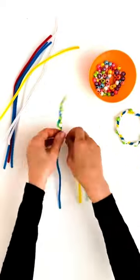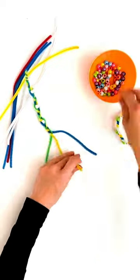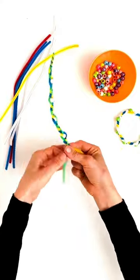You can choose different colored pipe cleaners and different colored beads. You could even use beads that have letters on them and spell out your name on your bracelet.